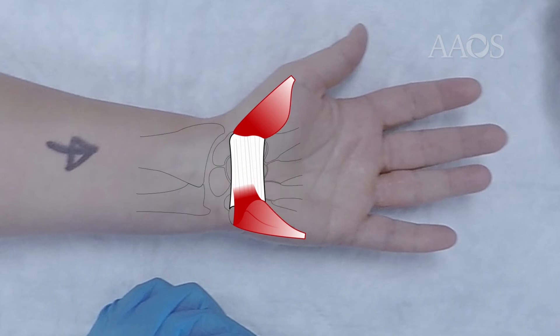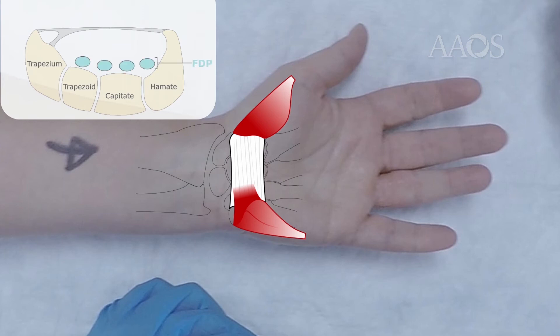Now that we've defined the tunnel, let's look at what goes through it. It contains the four tendons of flexor digitorum profundus, the four tendons of the flexor digitorum superficialis, and the tendon of the flexor pollicis longus, and of course, the median nerve.